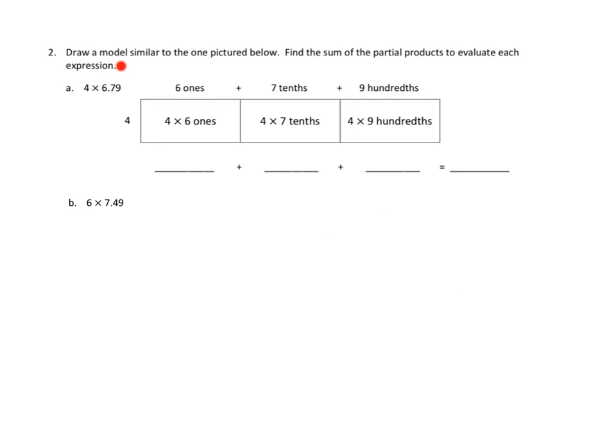Let's take a look at another problem. Problem number two asks us to draw a model similar to the one pictured below. Oh, these are area models. Find the sum of the partial products to evaluate each expression. Let's do 2a. Four times six and seventy-nine hundredths. I'm noticing that they broke down six into six ones. That's that part. And then the next part is seven tenths and then nine hundredths. So they broke down our number 6.79 into each of the units. Six ones, this is actually just unit form, right? Six ones, seven tenths, nine hundredths. And we multiply each of those by four because we're multiplying this all by four.